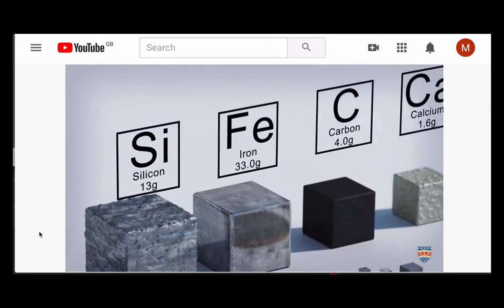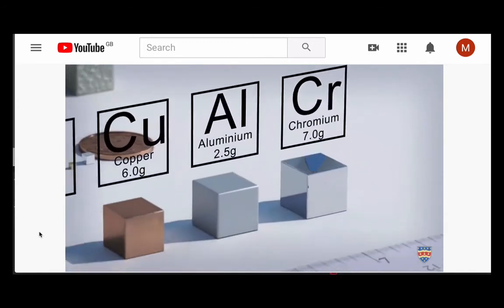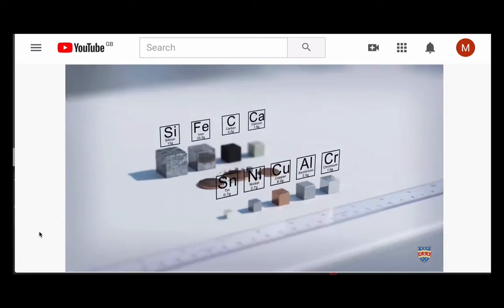33 grams of iron, 13 grams of silicon, 6 grams of copper, 2.5 grams of aluminum, 7 grams of chromium, 0.7 of a gram of tin, 2.7 grams of nickel.